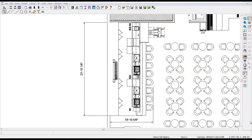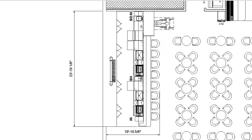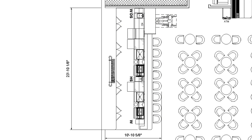Consider the following examples. Number one: the two-station shotgun bar. This bar design is becoming less popular. One bartender is utilized during slow periods, and an additional bartender works the other station on busy shifts. The bar shown in this example seats eight, is nearly 24 feet long, and requires 260 square feet of floor space.